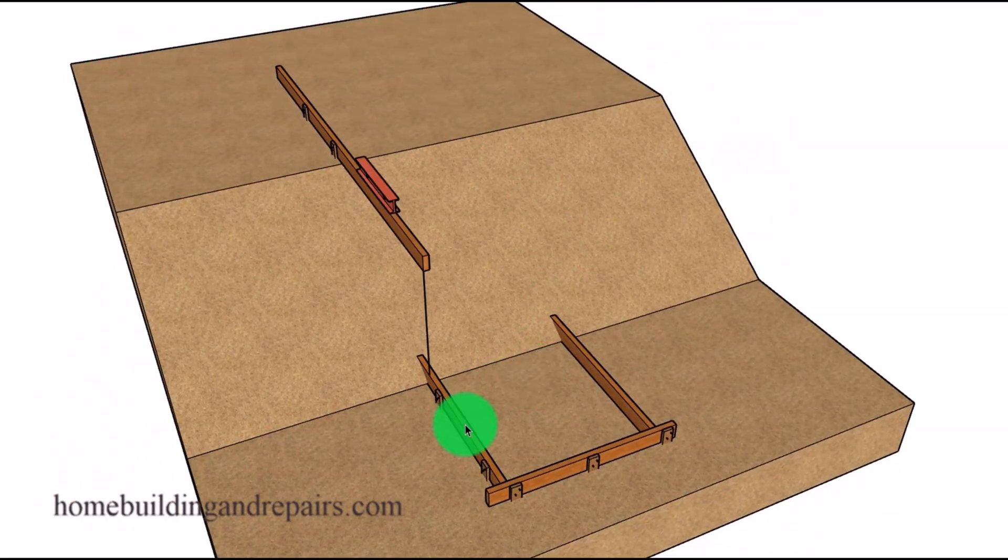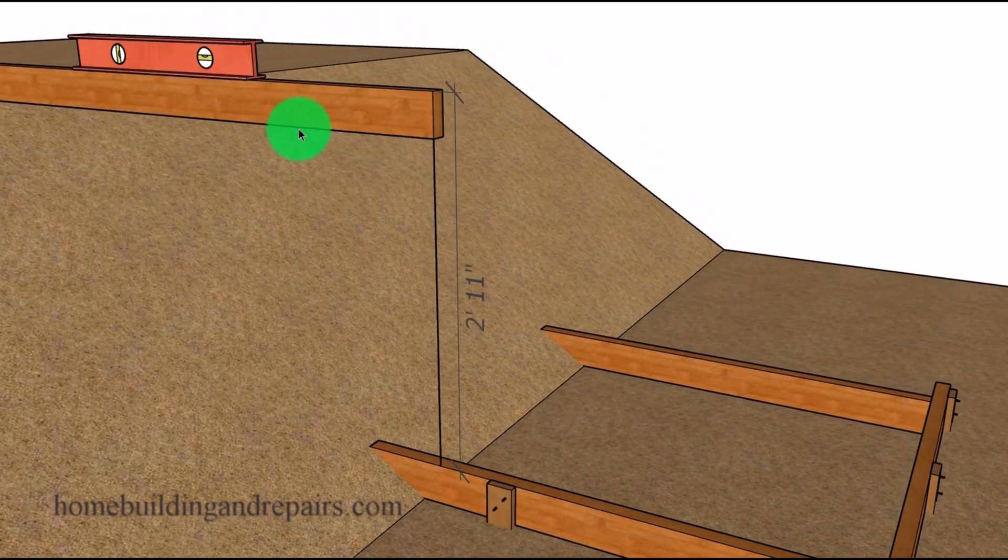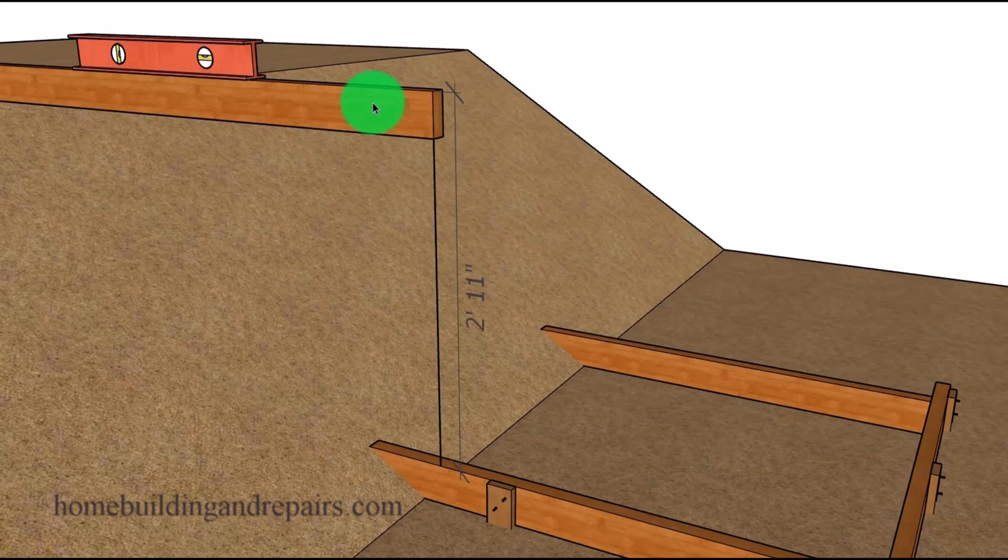And again, this is something that you can do under some circumstances and you might not want to do it under other circumstances. And if you're trying to figure out the riser height, you could always extend the form board and then level it so that you can get the measurement for the total rise.